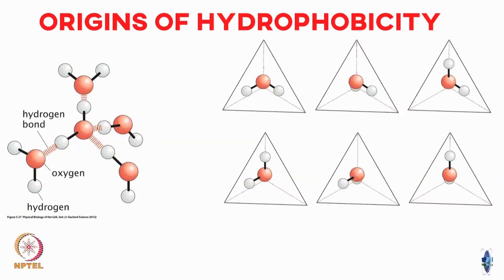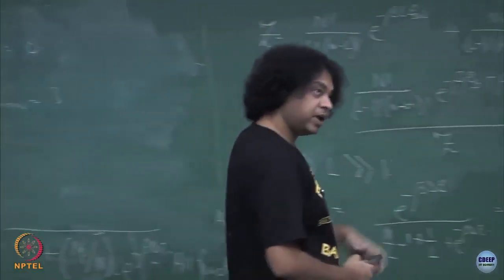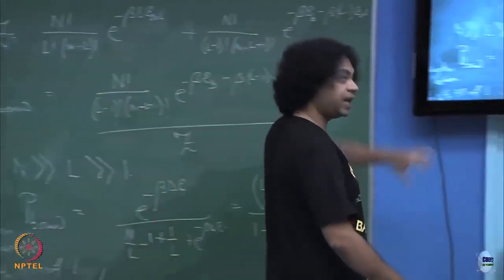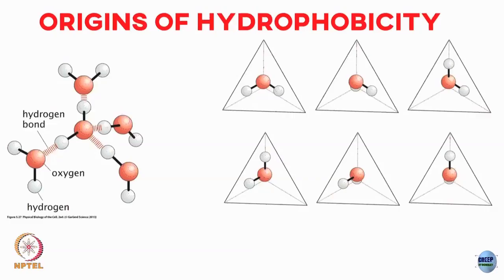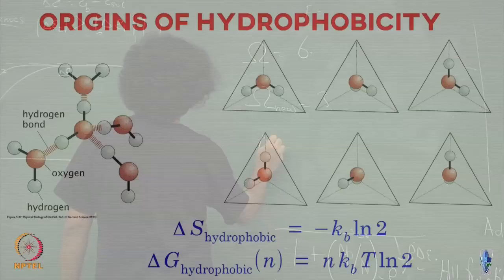If I replace the water molecule by a new molecule which does not form a hydrogen bond at any one of these vertices, I reduce the number of available conformations from 6 to 3. In this new case, omega_new has only 3 available conformations. So by introducing a molecule which does not like to form hydrogen bonding, I have reduced the number of available conformations from 6 to 3.